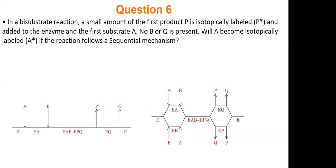In a bisubstrate reaction, a small amount of the first product P is labeled. So we start with P, and it's labeled. And I add that to the enzyme in the first substrate A. So I have E and I have A as well. So same setup. I don't have B or Q. No B, no Q. Will A be labeled if we follow a sequential mechanism? Will A be labeled if we follow a sequential mechanism? Alright, so let me get this poll up now. Let's see what we think.